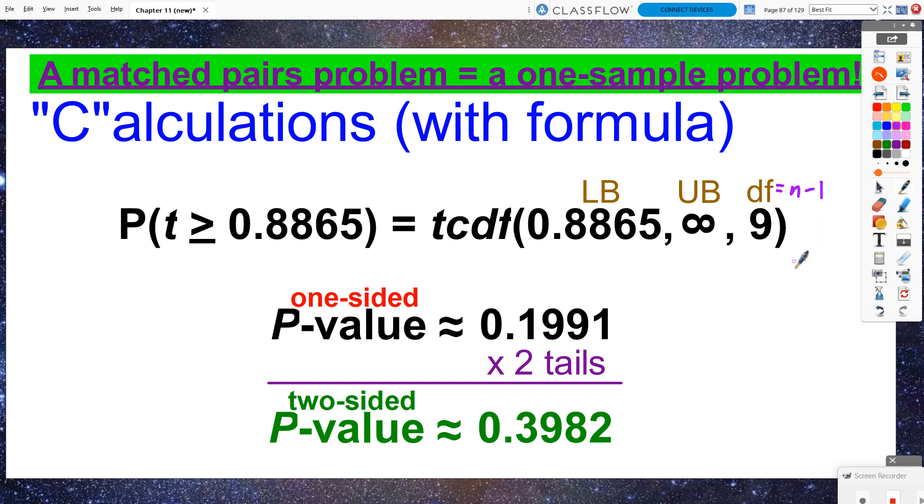I don't have to worry about that crazy two sample problem or the smaller sample size minus one. There's only one sample size. When I get that p-value, I get about 0.1991. But then I got to remember, the alternate hypothesis was a two-sided test. So I need to double this p-value to be just under 40% overall.